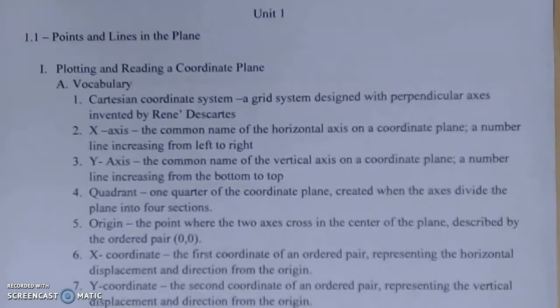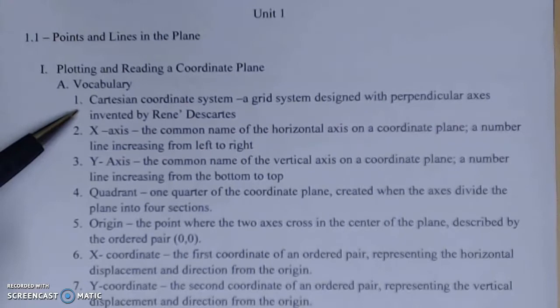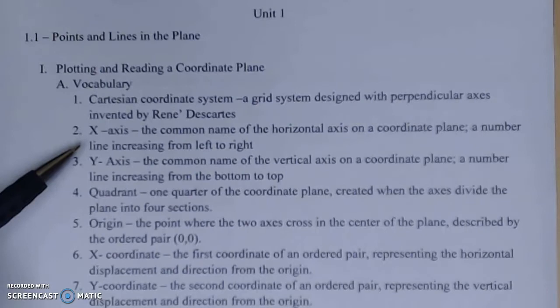For this first section, we're going to be looking at points and lines in the plane. I want to define some different words, and then we're also going to look at them in a picture. The first thing I want to talk about is something called the Cartesian coordinate system. This is a grid system designed with perpendicular axes, invented by Rene Descartes.